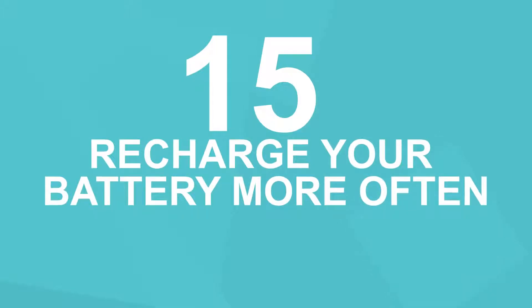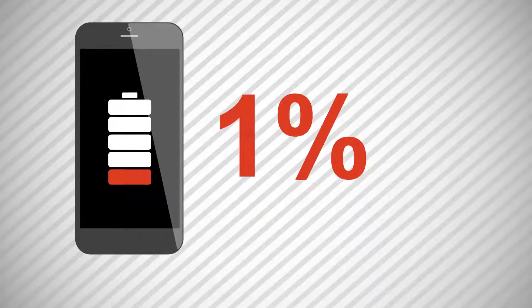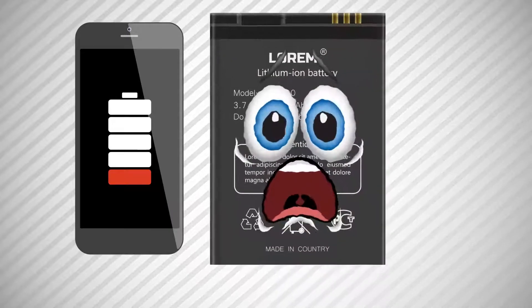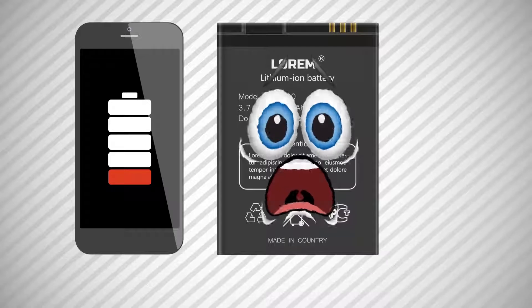15. Recharge Your Battery More Often. Do you know that you shouldn't charge your cell phone battery until the energy drops to zero? Well, that's not true, at least today. Modern lithium ion and lithium polymer batteries have no memory effect, so you can recharge them without waiting.